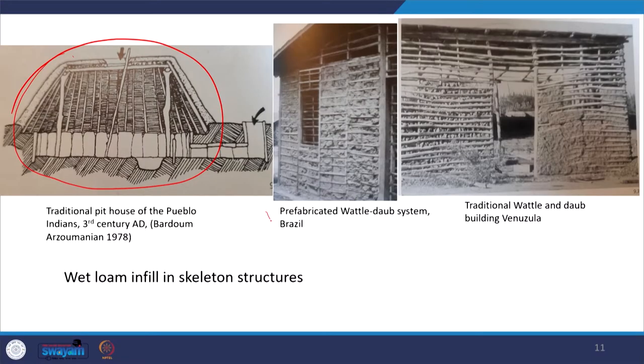There are also advancements in wattle and daub: people have adopted prefabricated wattle-daub systems in Brazil, and wattle and daub buildings are also seen in Venezuela. The infill material is plastered with wet loam plasters depending on soil conditions — soil content, silt content, clay content — and if any stabilizers are needed, they are added before applying it to the surfaces.